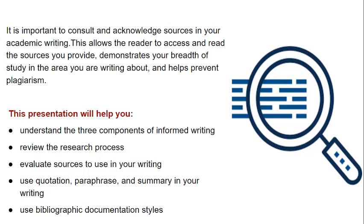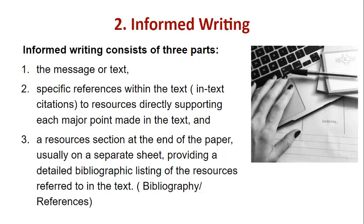This presentation will help you understand the three components of informed writing: review the research process, evaluate sources to use in your writing, use quotation, paraphrase and summary in your writing, and use bibliographic documentation styles. Any informed writing consists of three parts: number one, the message or text; number two, specific in-text citations to resources directly supporting each major point; and finally, a resources section at the end of the paper — usually on a separate sheet — providing a detailed bibliographic listing of the resources, addressed as bibliography or references, placed after your academic write-up.